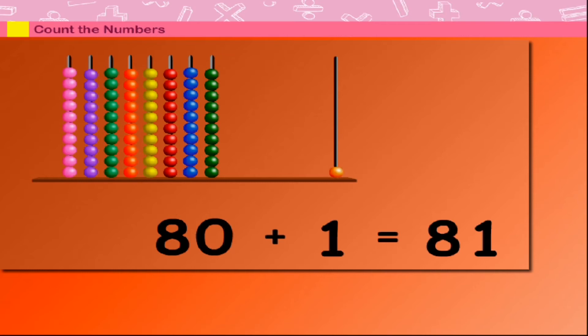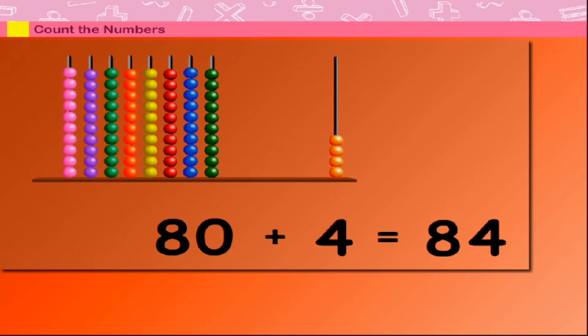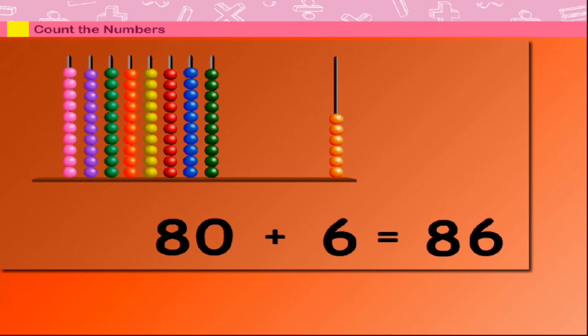80 plus 1 is equal to 81. 80 plus 2 is equal to 82. 80 plus 3 is equal to 83. 80 plus 4 is equal to 84. 80 plus 5 is equal to 85. 80 plus 6 is equal to 86.